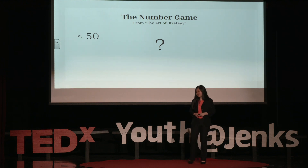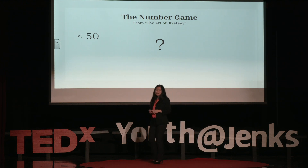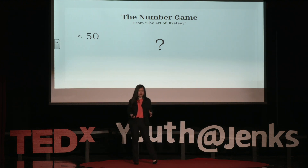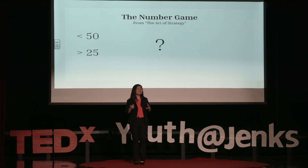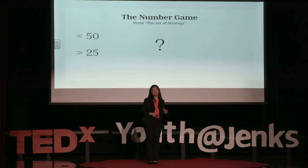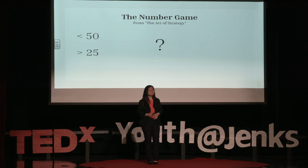Twenty-five. You're catching on. But my number is bigger than twenty-five. Now your third guess — what is your third guess going to be? Thirty-seven. It would be thirty-seven, because again, it is that halfway point between twenty-five and fifty. But my number is still bigger than thirty-seven.